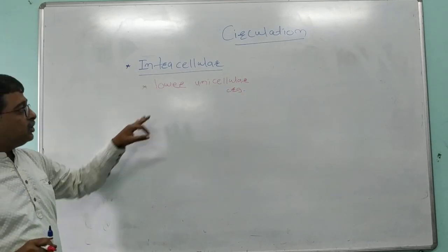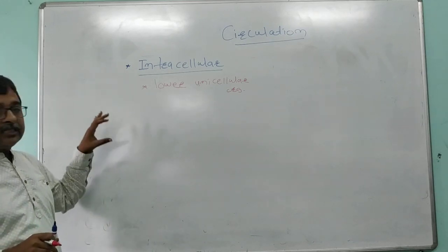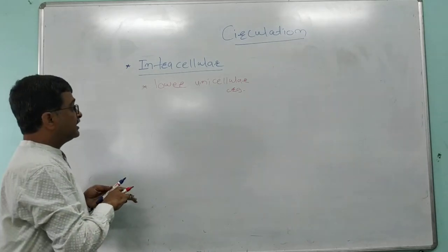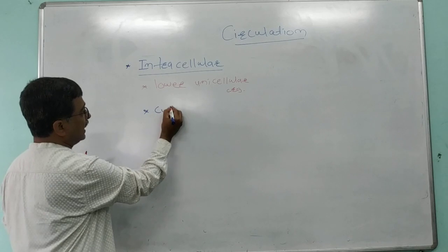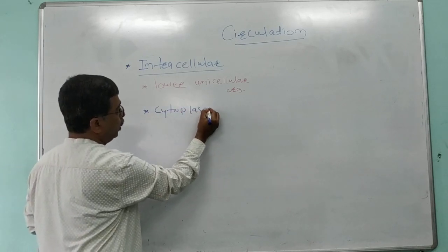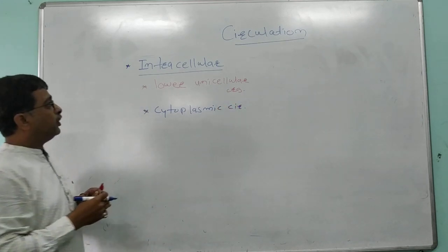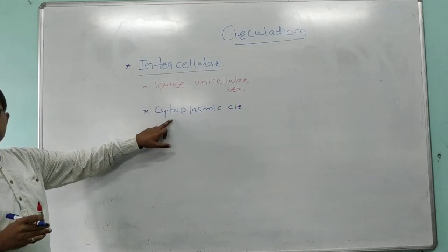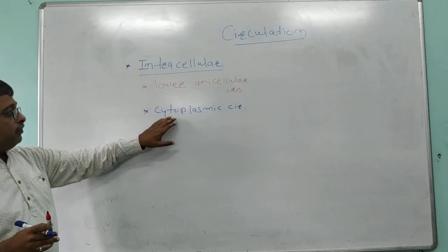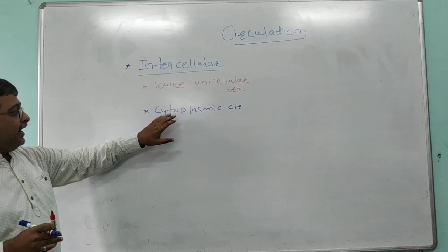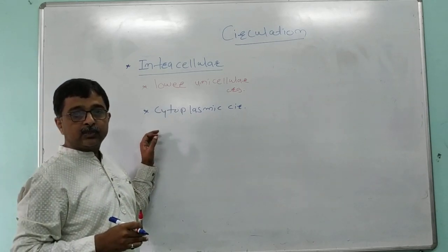In these unicellular organisms, the process of circulation is completed by the cytoplasm. Therefore, it is also called cytoplasmic circulation in lower unicellular organisms, because the cytoplasm performs the entry and exit of materials into these organisms.